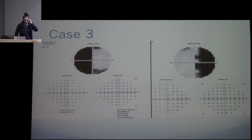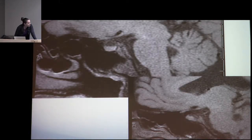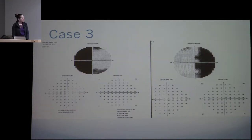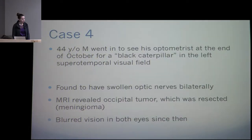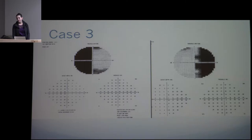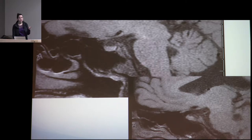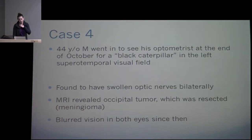To be fair, a lot of patients don't notice temporal field loss until they're doing monocular viewing and can't read the right half of the eye chart with their right eye or the left half with their left eye. With both eyes together they can compensate. So — is this a bow-tie optic atrophy? Not exactly — we'll come back to that.